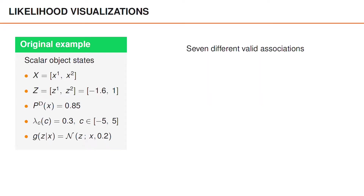Let's visualize what this n-object measurement likelihood can look like, using an example that resembles one from single object tracking, but this time with two objects. There are two measurements, Z1 and Z2, equal to minus 1.6 and 1 respectively. The probability of detection is 0.85, the clutter intensity is 0.3 on the interval from minus 5 to 5, and the measurement likelihood G is a normal density with mean x and variance 0.2. For this example, there are seven different valid associations.